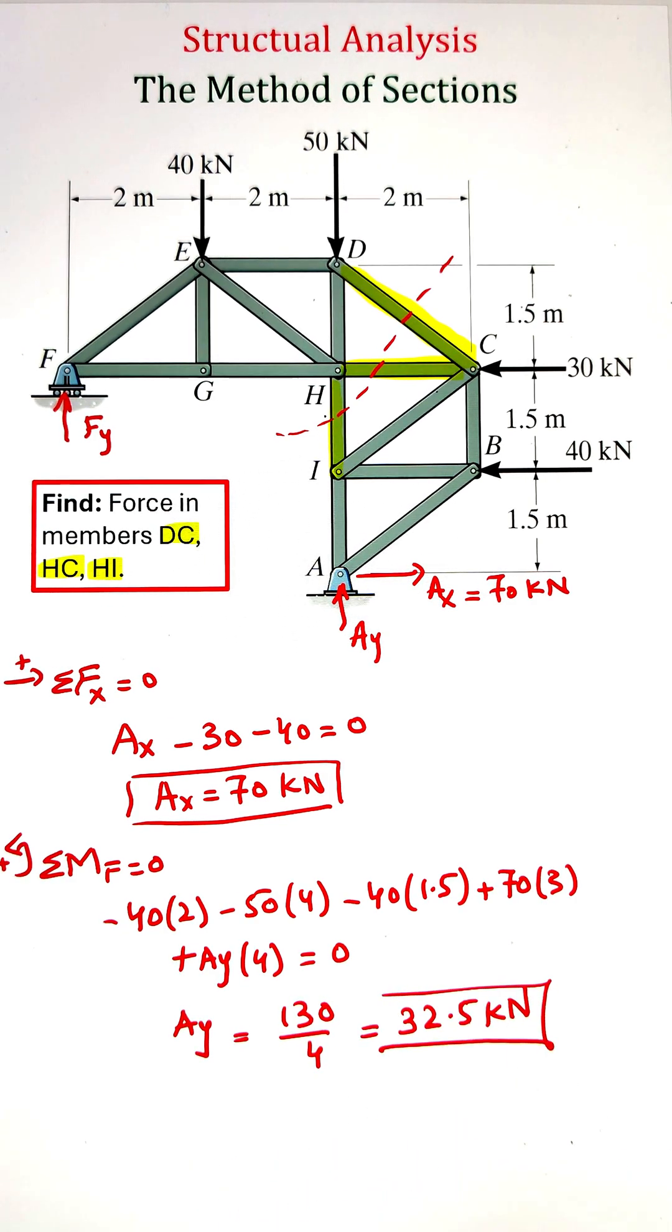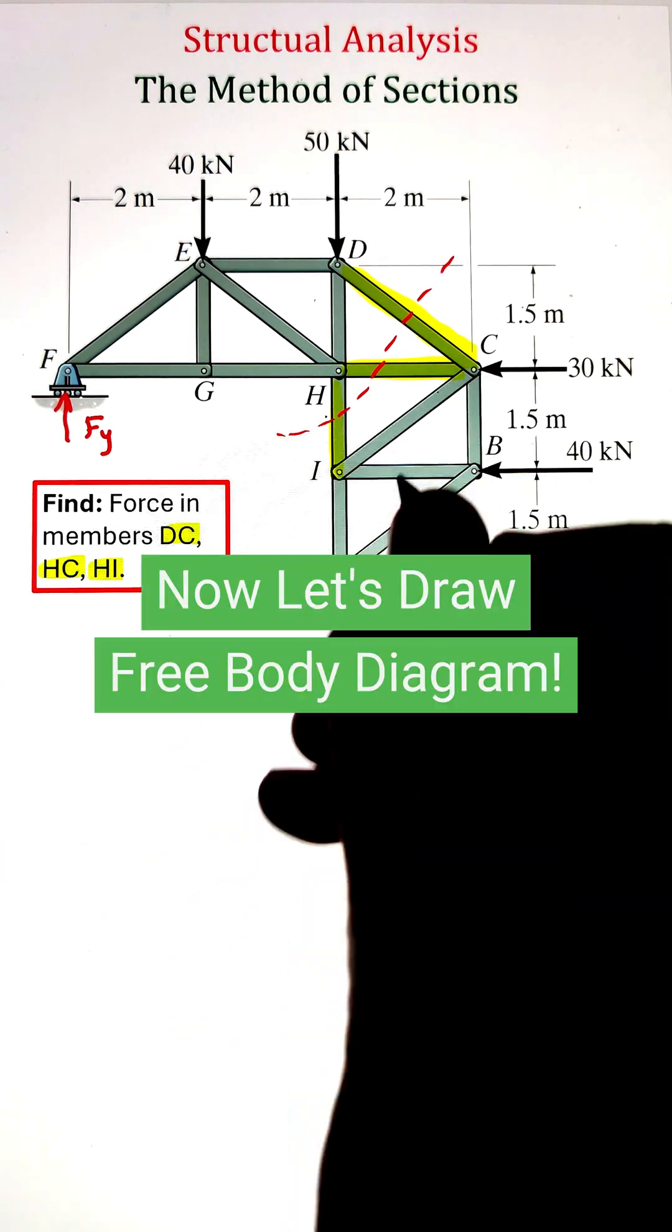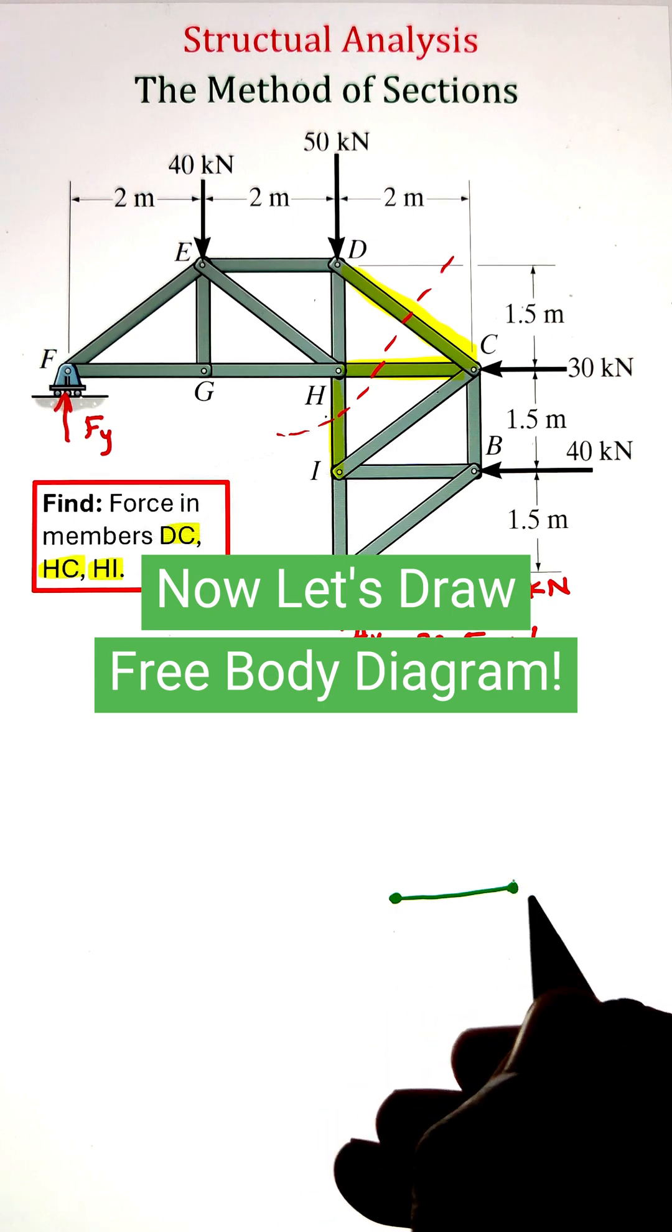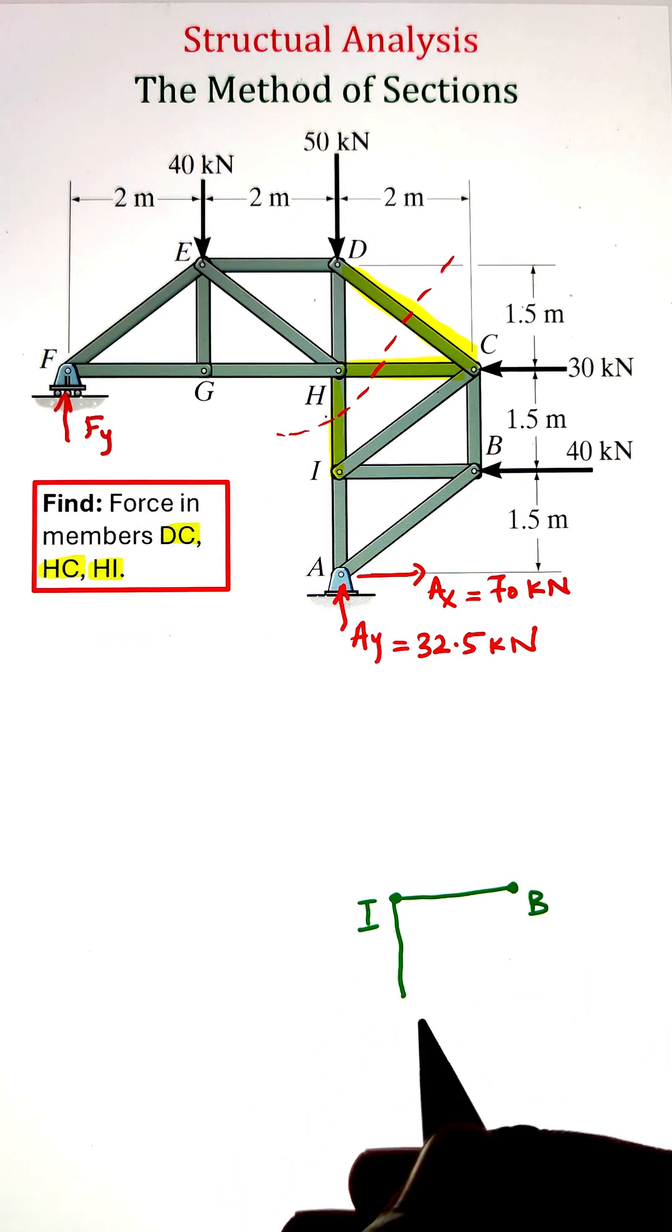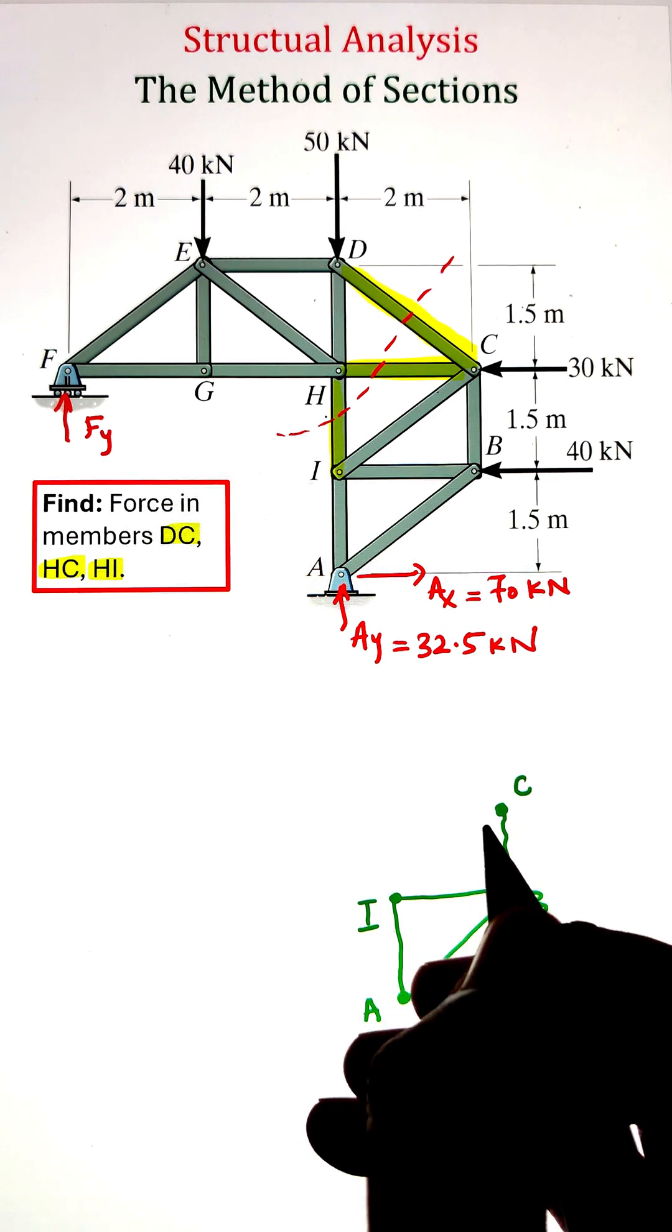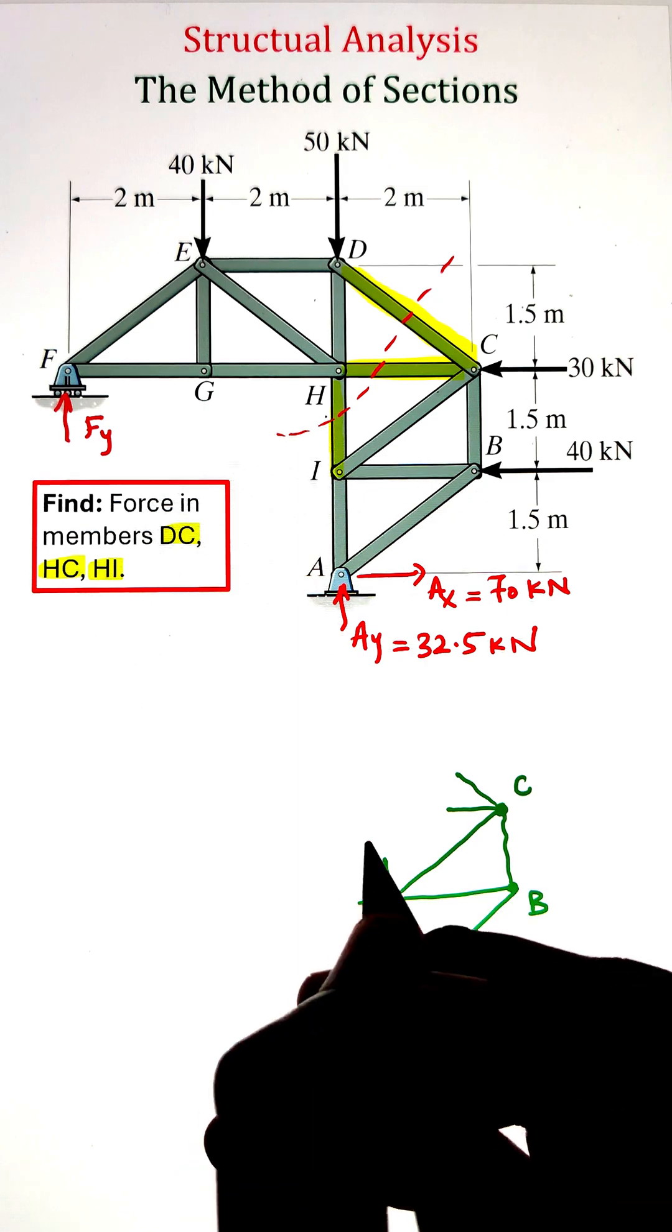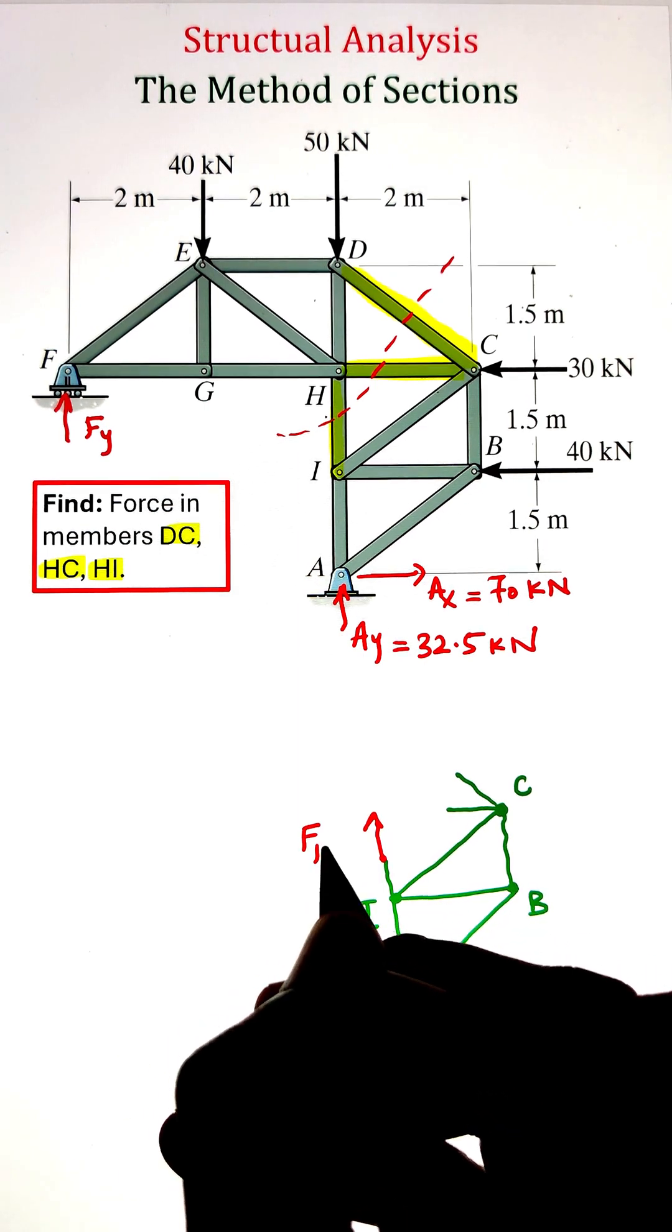That is coming to 32.5 kilonewtons. Next we can go ahead and draw the free body diagram of the selected section. Since we have made a cut along the members CD, CH, and HI, the internal forces along those directions will become exposed and they are shown here in tension.